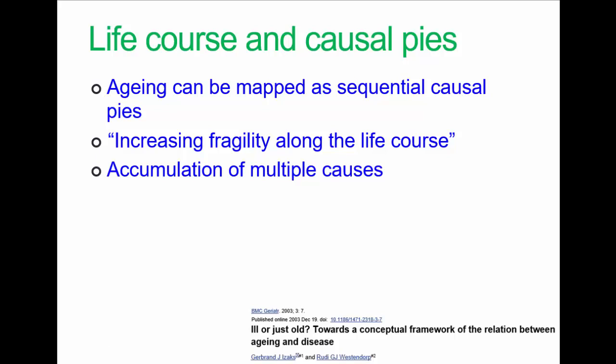Another potential consequence of the model is the suggestion that normal aging cannot be separated from pathological processes causing disease later in life. This is slightly controversial. If you want more background, have a read of this paper.